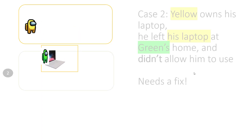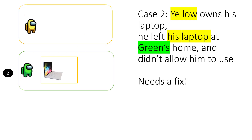In case two, one day yellow goes to green's apartment and leaves his laptop at green's place. But this laptop belongs to yellow, and he didn't allow green to use it. So do you think green can use yellow's laptop? The answer is no — because yellow didn't give permission to green, even though he left his laptop at green's home.